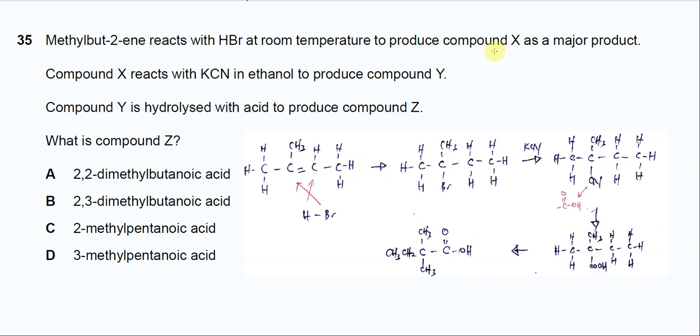This is the first step. First you must know methylbutyene is this one, and the H will attach to the carbon with more hydrogen according to Markovnikov's rule because it's a major product. So the H will go to this carbon and this carbon will get the bromine, forming compound X.